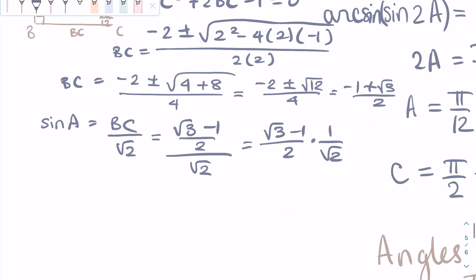When we simplify this by multiplying by square root of 2 on the numerator and denominator, in order to rationalize it, we get the answer, square root of 6 minus square root of 2 over 4.